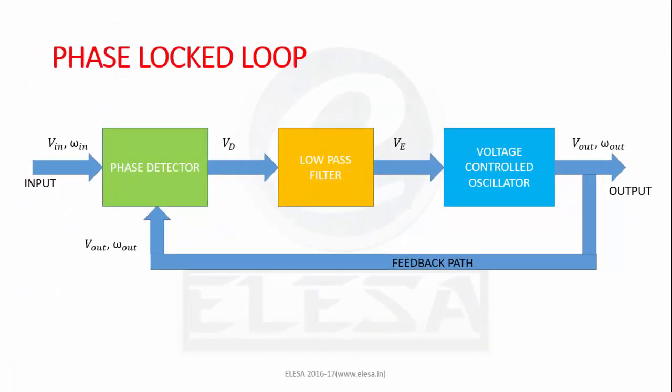This is the block diagram of PLL containing three basic blocks. The output of phase detector is fed back to phase detector through feedback path.